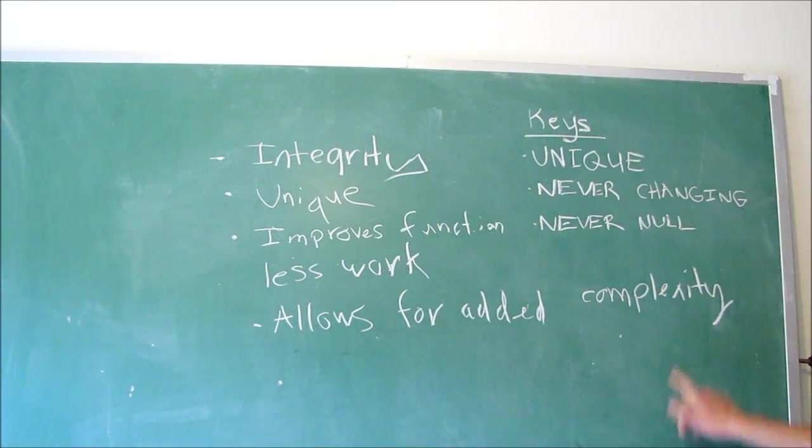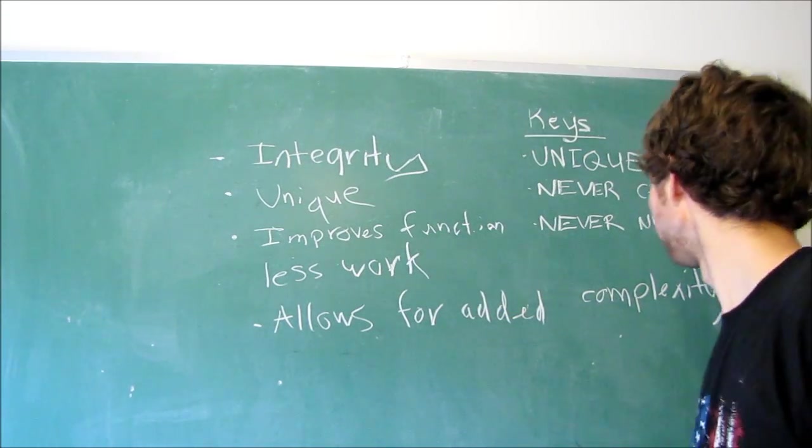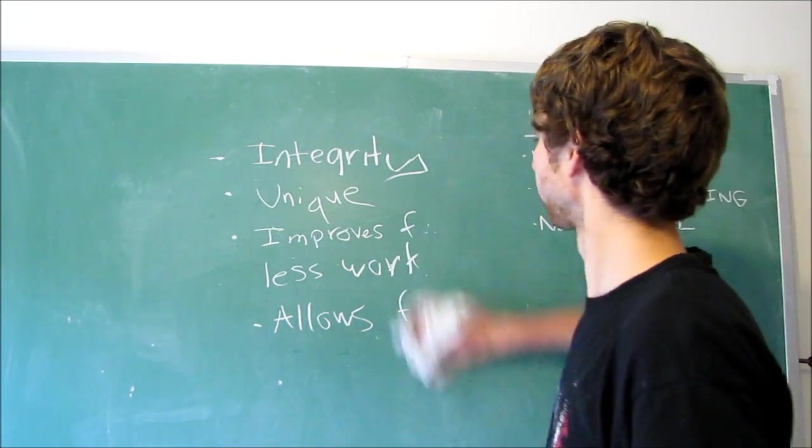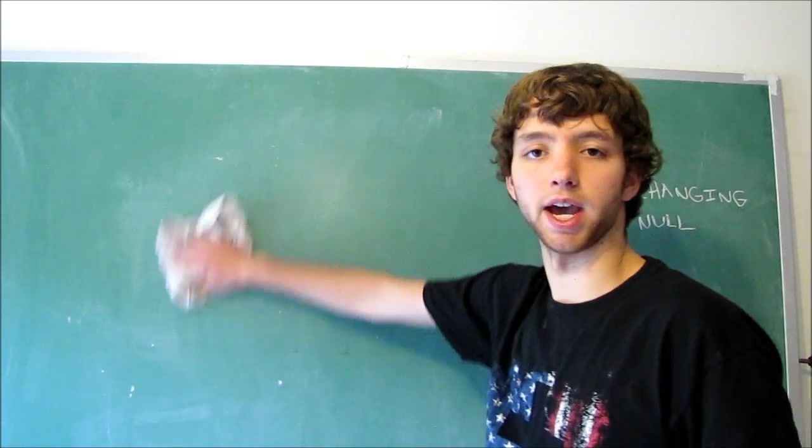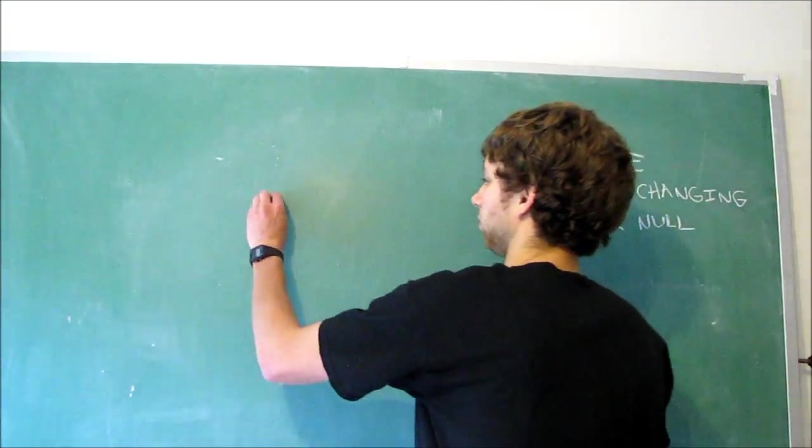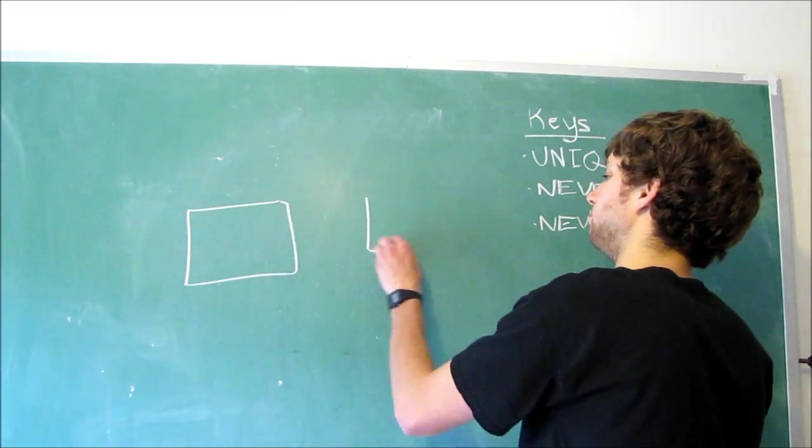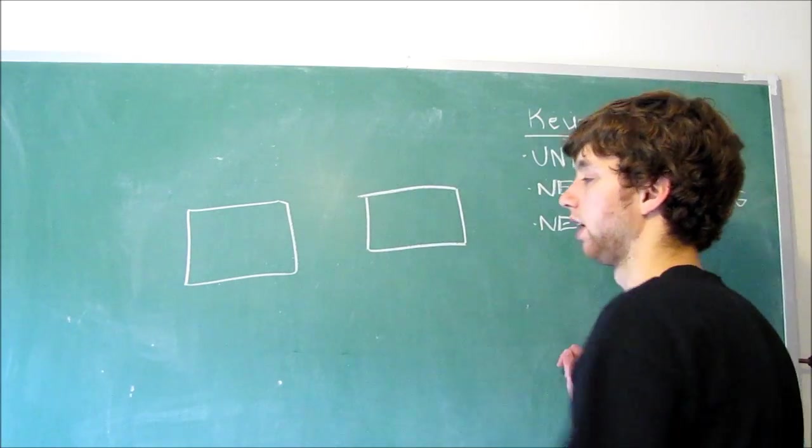So here's just some examples. I'll show you how we can say it allows for added complexity. I'm going to redraw the example we had, but I'm not going to draw it super in-depth, so don't worry, it won't take that long. We had members, and then we had the membership. Now let's focus on this membership table.